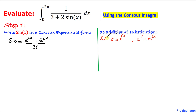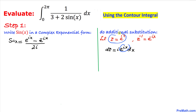Now let's take the derivative of z = e^(ix) on both sides. That gives us dz equal to i times e^(ix) times dx. Since e^(ix) equals z, we get dz = iz·dx, so isolating dx gives us dx = dz divided by iz.